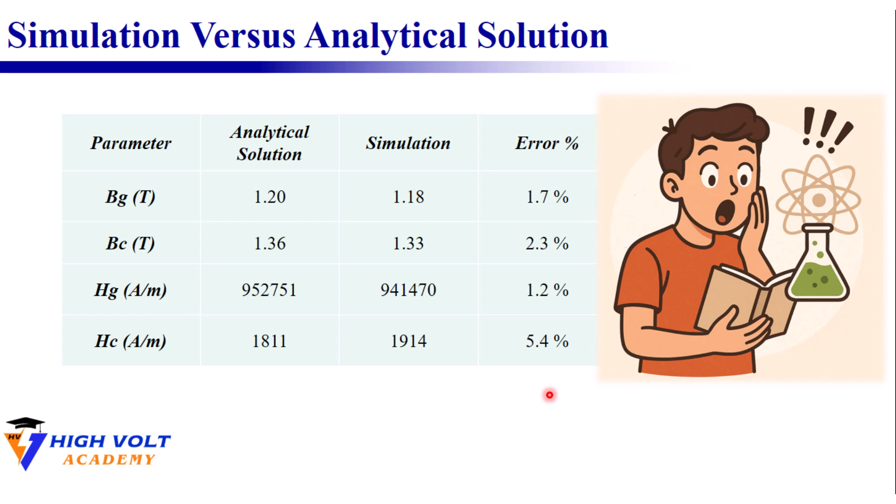That's amazing. Despite all the simplifications, the analytical method gets incredibly close to the finite element results. So what have we learned? Even with assumptions like constant Hc and Bc and ignoring non-uniform flux in the core, our final analytical result differs by less than 2 percent from the full COMSOL simulation.